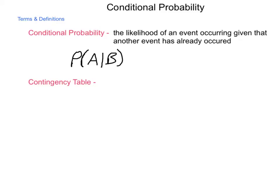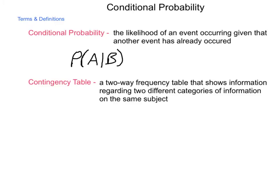To help organize information so that we can look at it in regards to conditional probability, we use what are called contingency tables. These are two-way frequency tables that show information regarding two different categories of information on the same subject. We have a table where topic A is given along one side and topic B along another, and the intersection is where topics A and B come together.